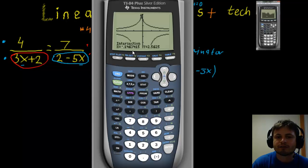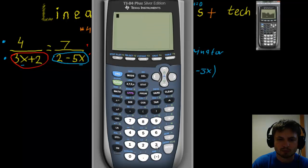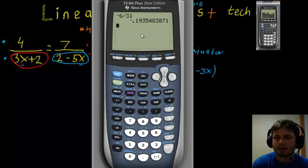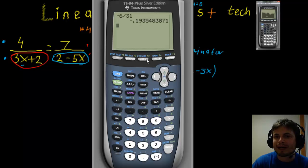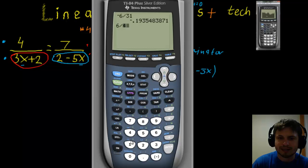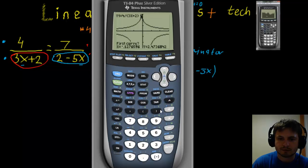The GDC gives a decimal, not a fraction. Let's verify by calculating our manual answer: minus 6 divided by 31 gives minus 1.935 — that's different! Looking back, I see my mistake: 5x times 4 is 20x, not 10x. So the denominator should be 41, not 31. Checking minus 6 divided by 41 gives the same decimal as the GDC — that's correct.